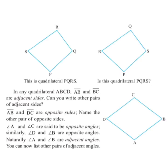In any quadrilateral ABCD, side AB and side BC are adjacent sides — adjacent means next to each other. The other pairs of adjacent sides are: BC and CD, CD and DA, and DA and AB.